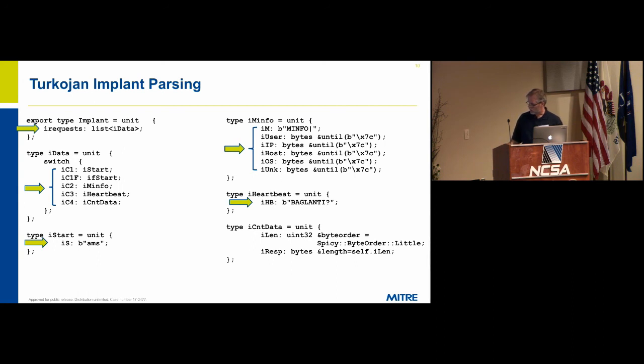The other responses from the implant was very easy to parse. The count data from the implant consists of a four-byte length, and it's in little endian order. The response to whatever command came from the controller consists of some number of bytes, the length of which is specified by this unit. You can refer back to that, which is a very useful feature.